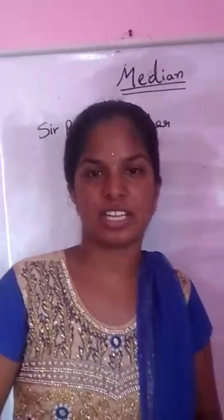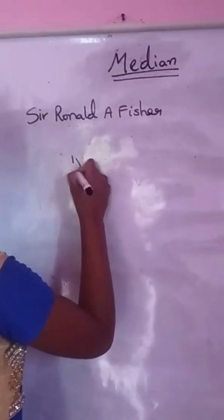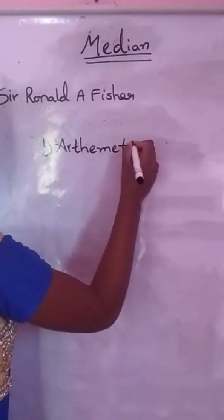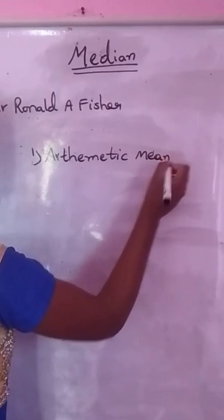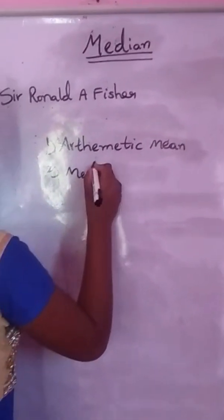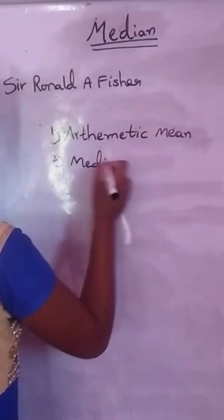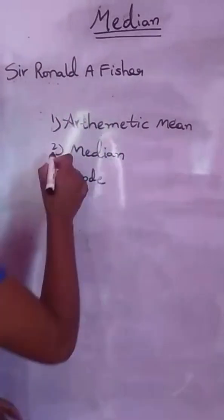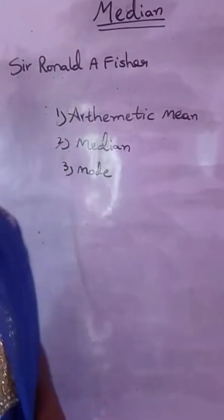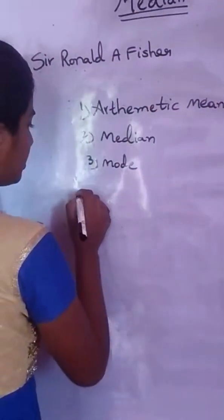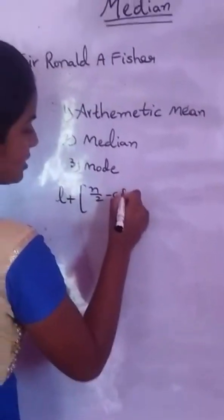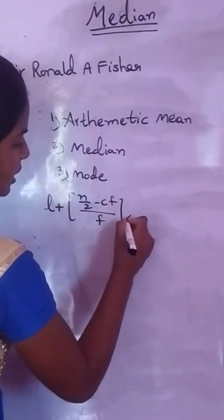There are mainly three measures of central tendency. They are mean, median, and mode. Today I am going to tell about median. Median is the middle most value of the data, that is 50% of the data. Now, the median formula: L plus N by 2 minus Cf by F into H.